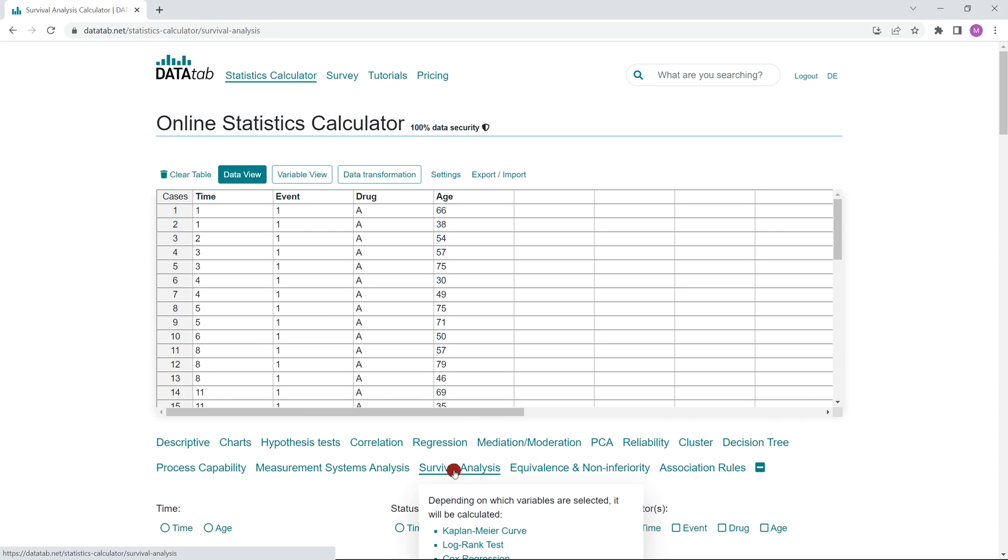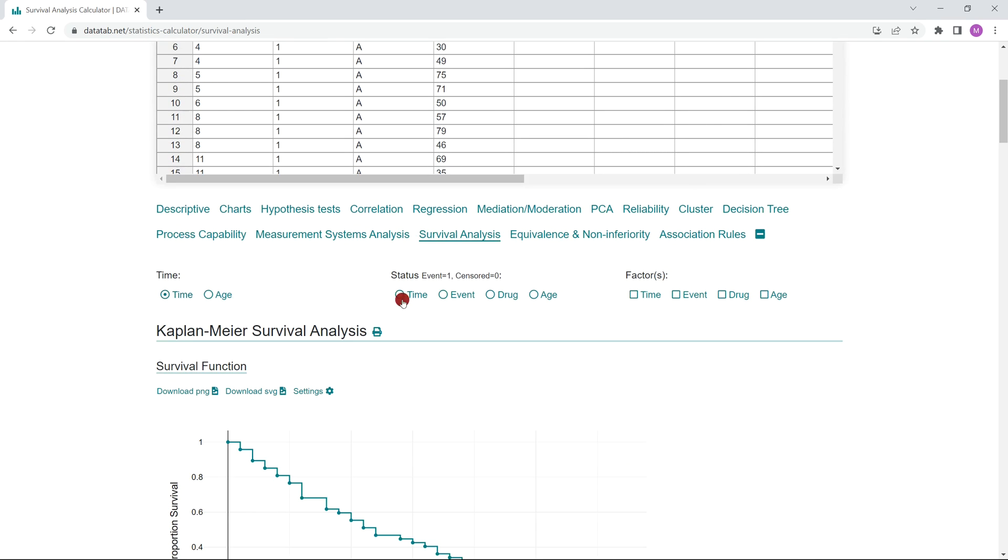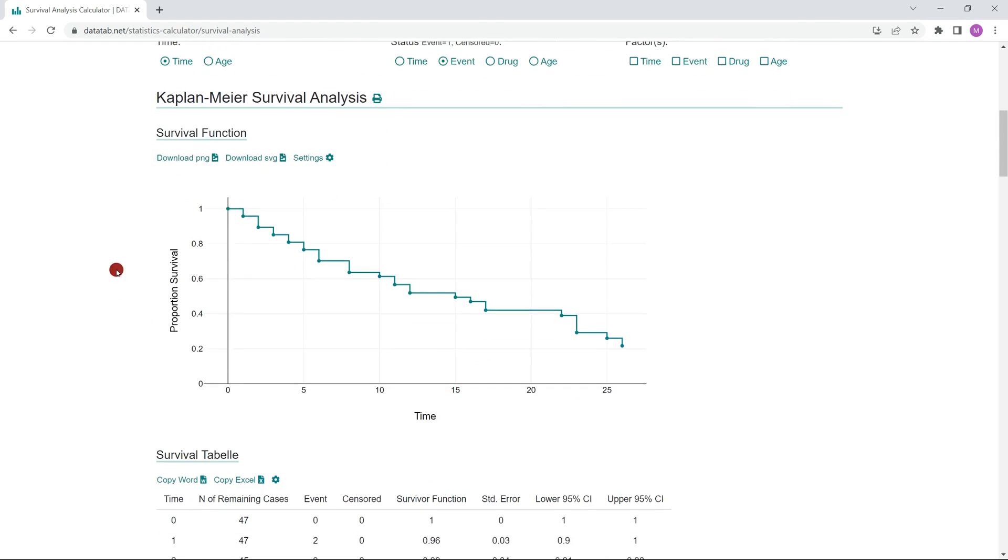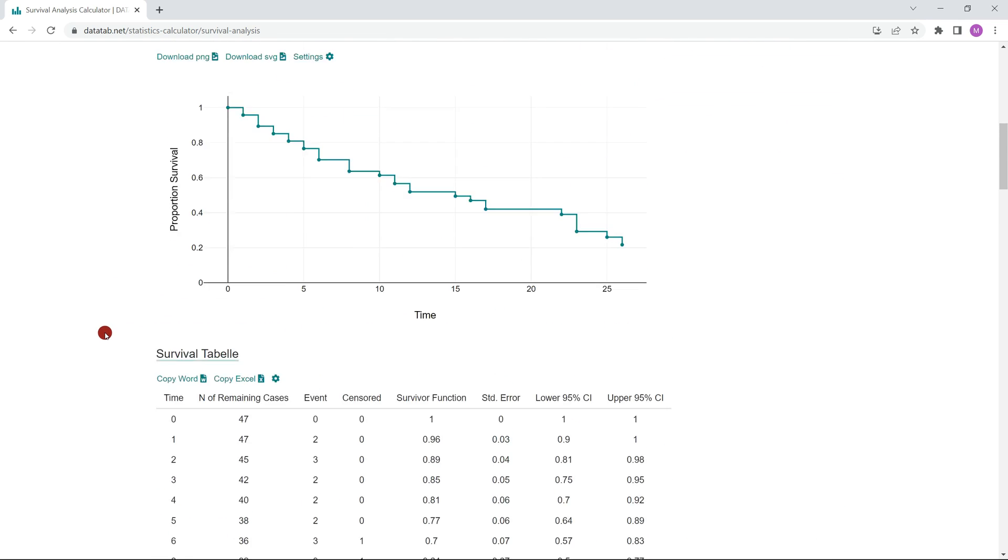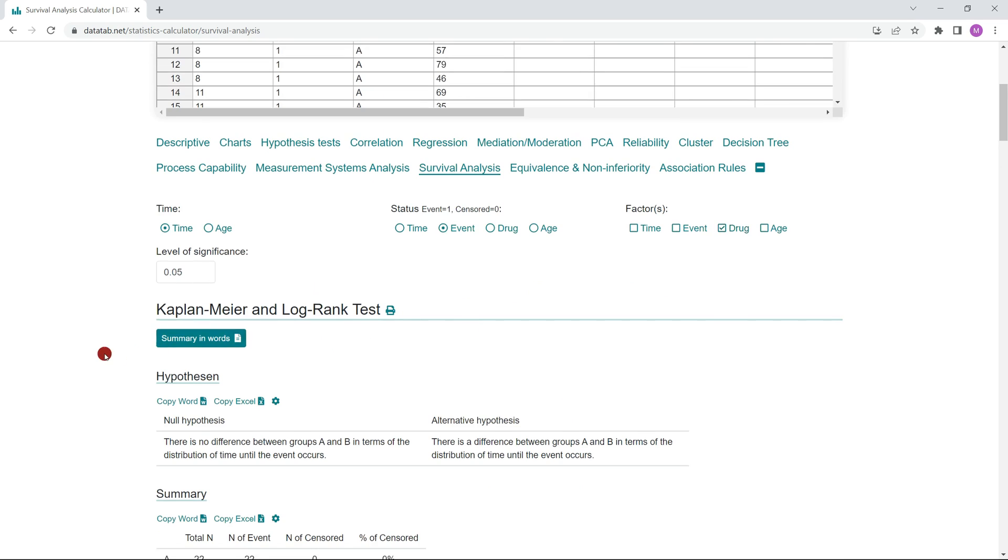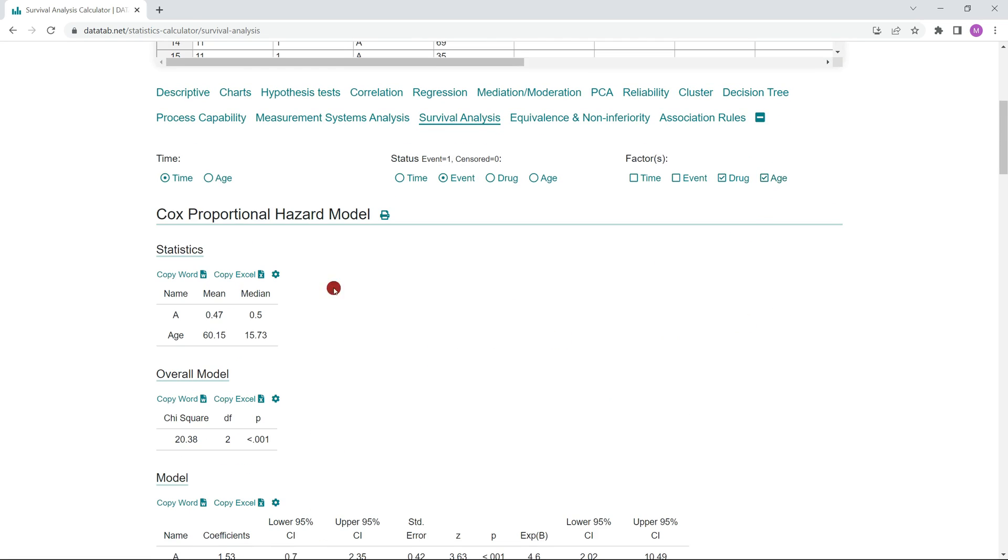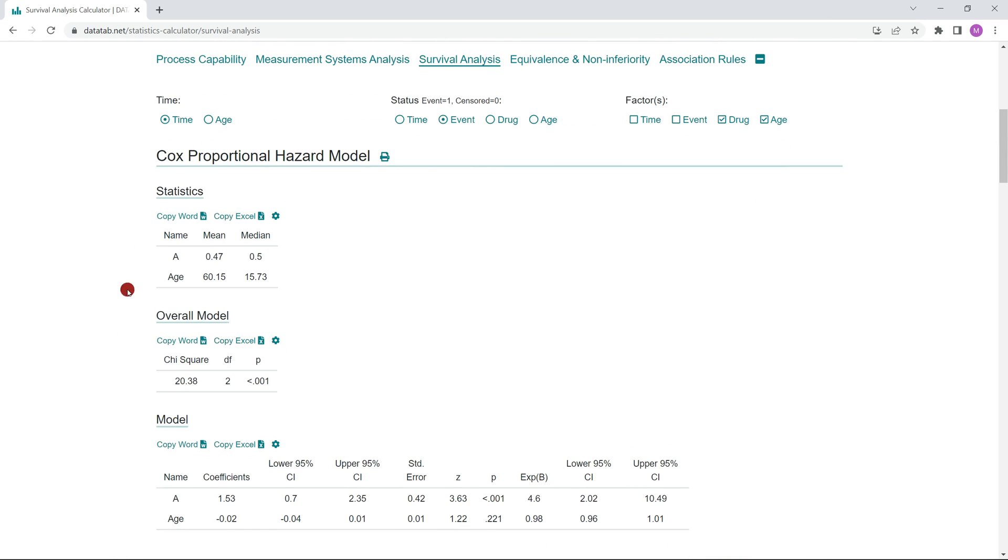Now we click on survival analysis. Under this tab, depending on which variables you click on, different methods of survival analysis will be calculated. If you only click on the time and the status, the Kaplan-Meyer curve will be displayed. If you click on the drug, you will get the log rank test. And if you click on the age, you will get the Cox regression.